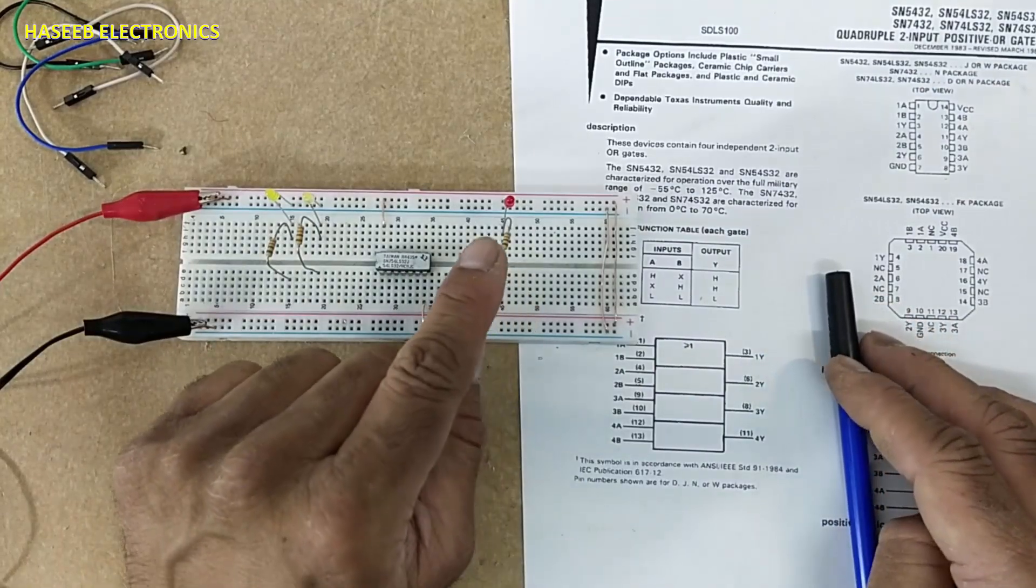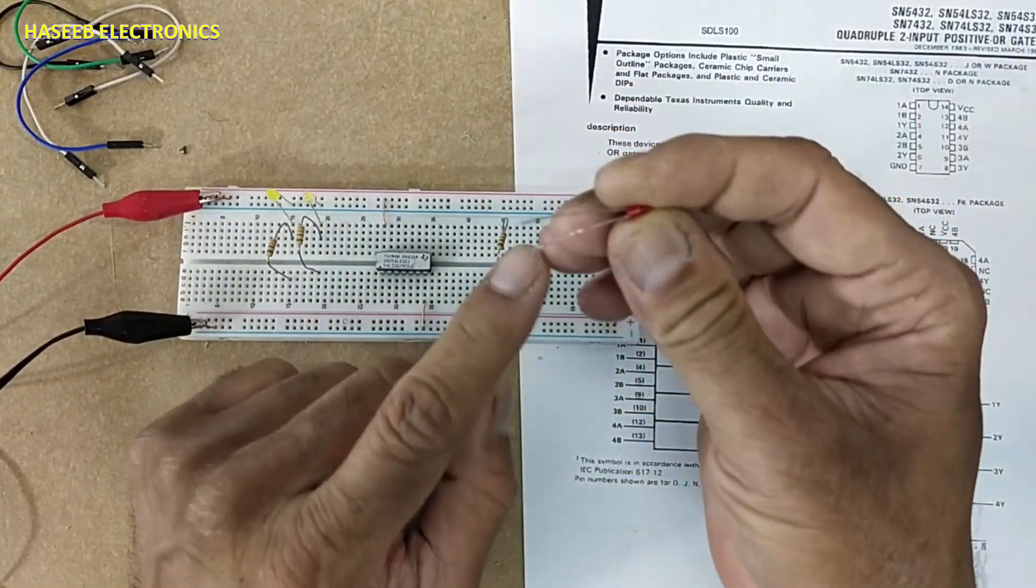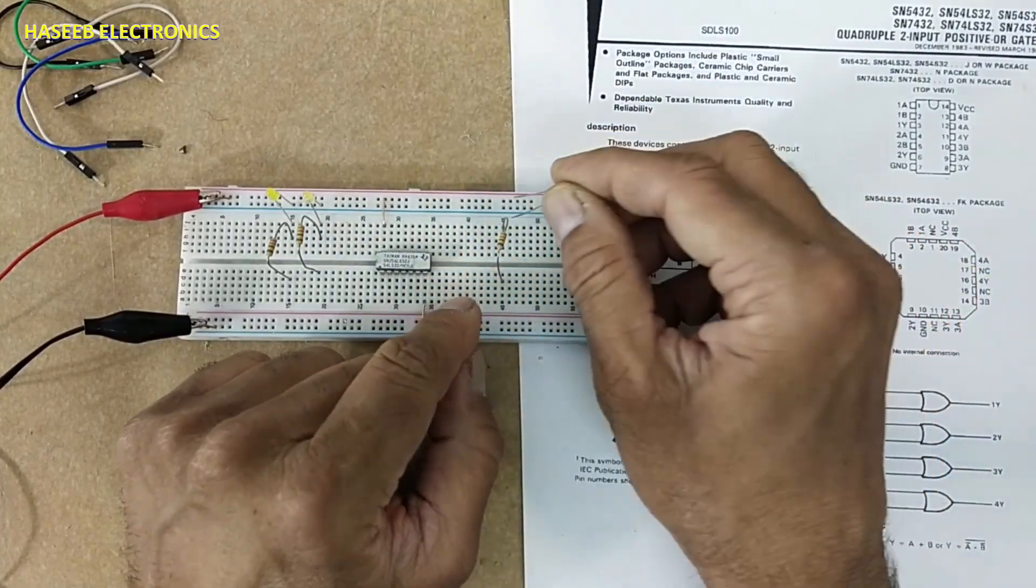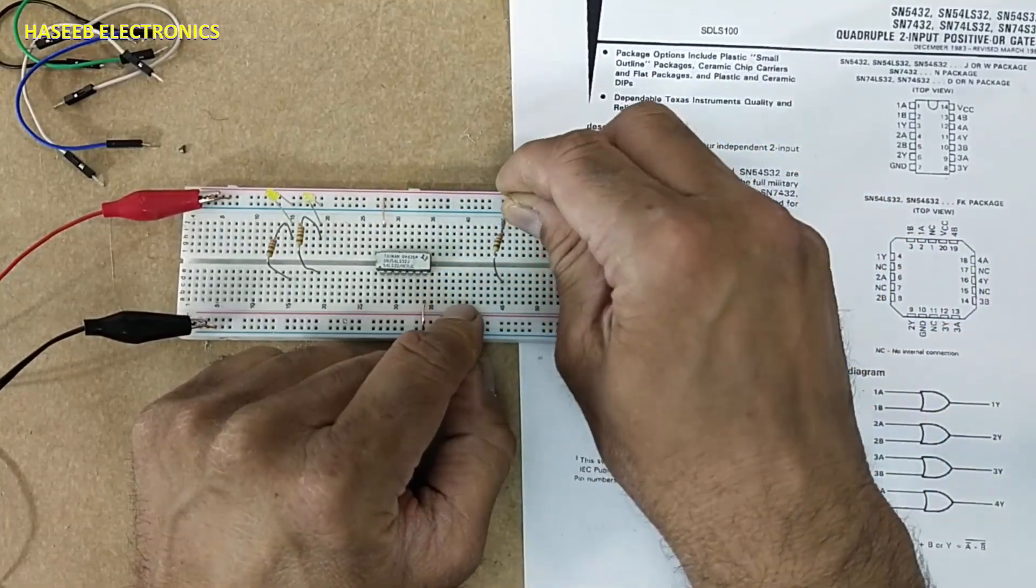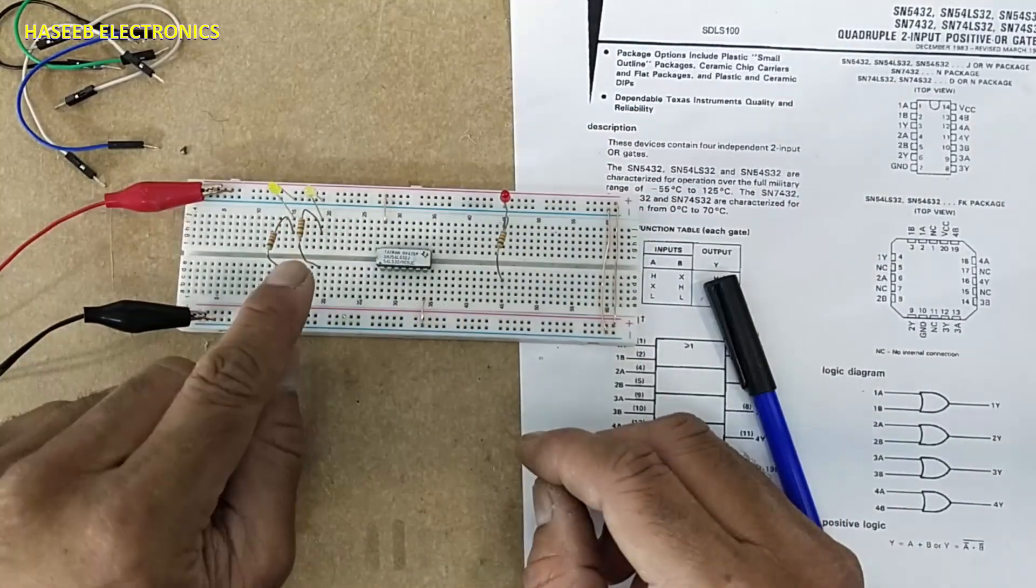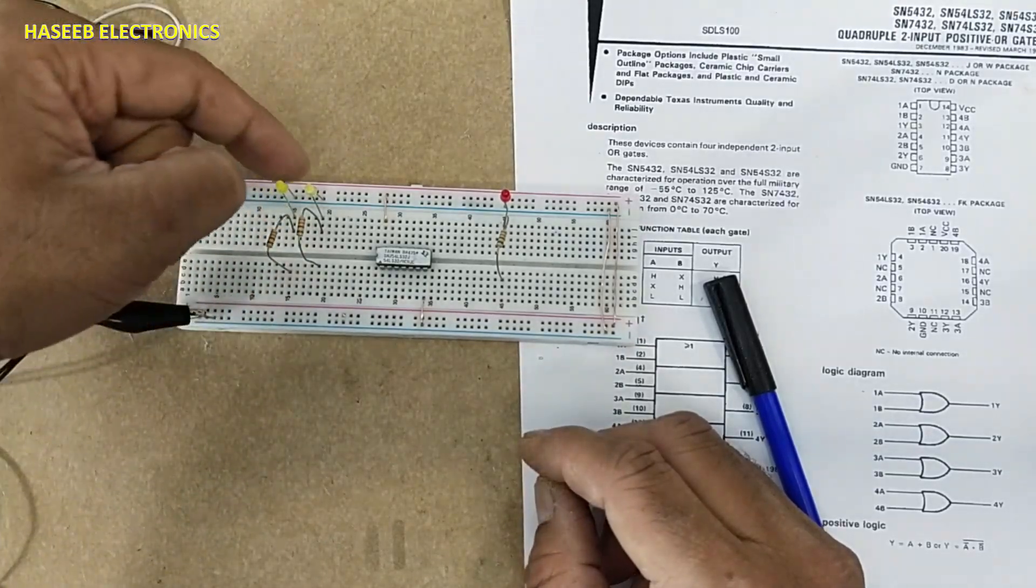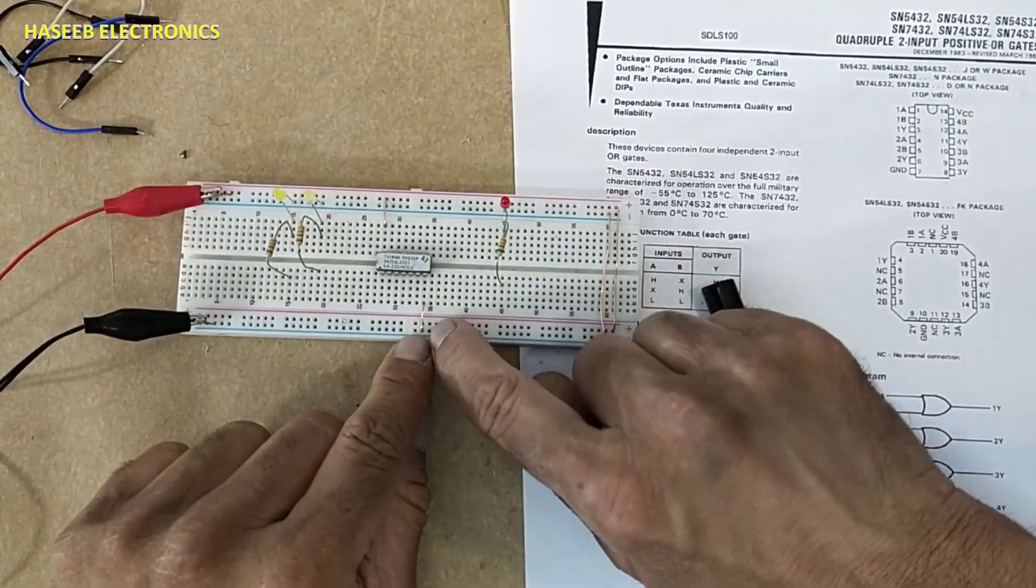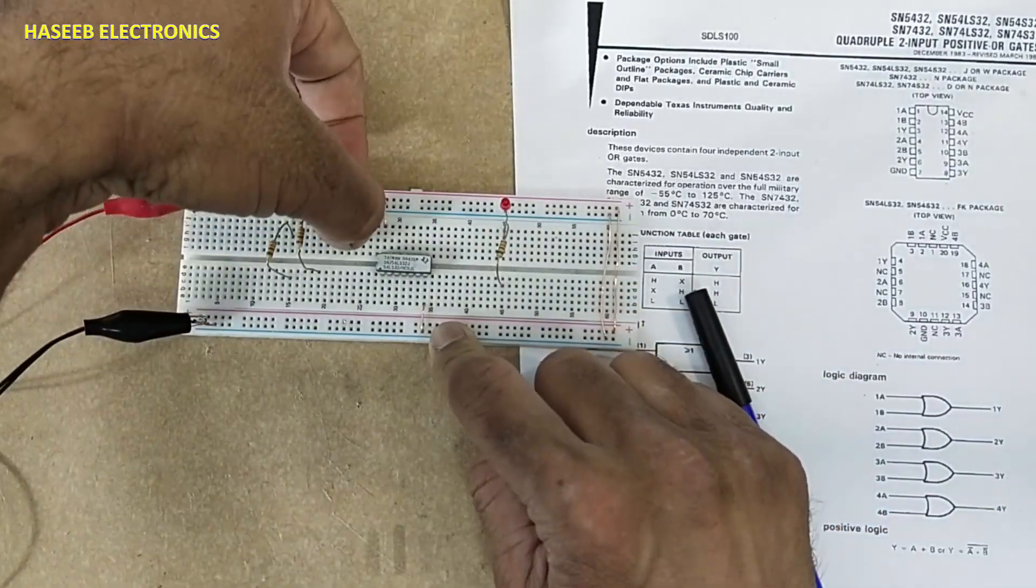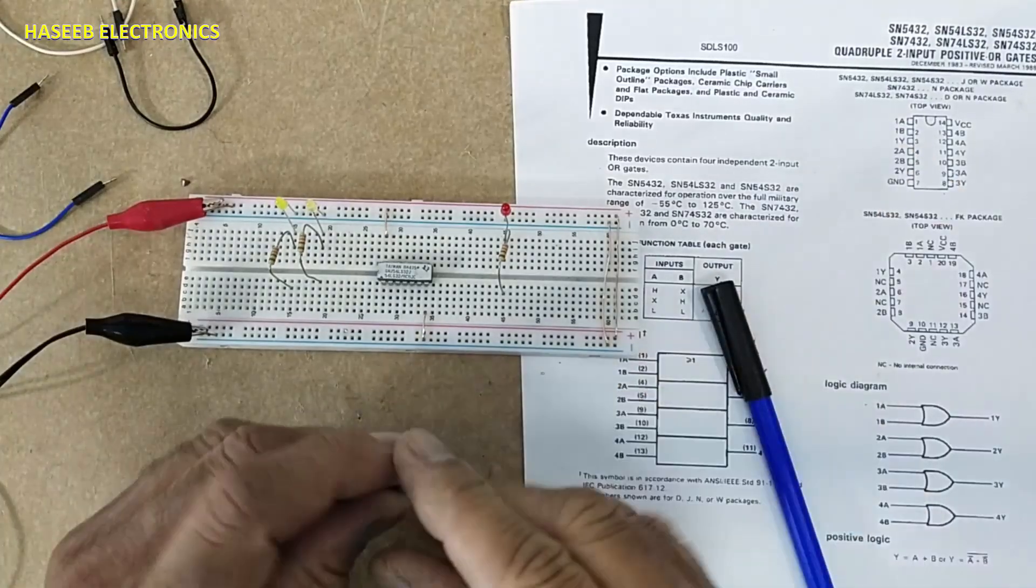I connected 330 ohm resistor with anode of the LED and cathode is connected to ground. Same way here, resistor, anode, cathode is ground. Resistor, anode, cathode is ground. Pin number seven is connected to ground, pin number 14 is positive. We will take output from pin number three.